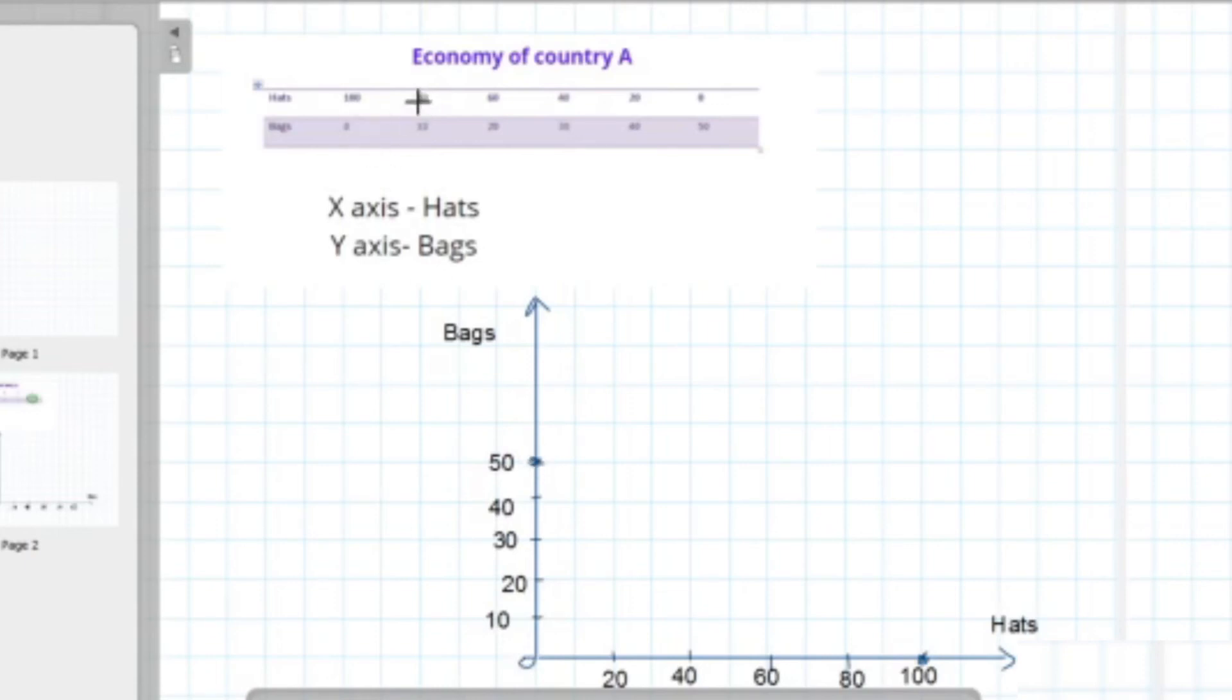When hats produce 80 units, 10 bags are being produced: 80, 10. When hats produce 60 units, 20 bags are being produced. 40 to 30. 20 to 40.